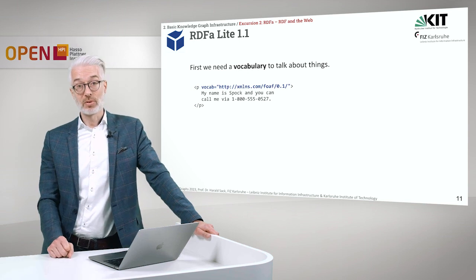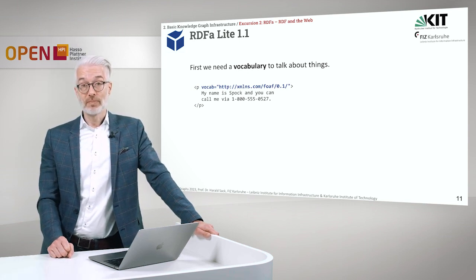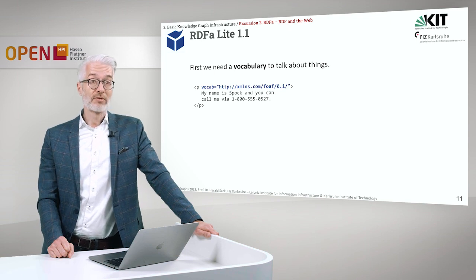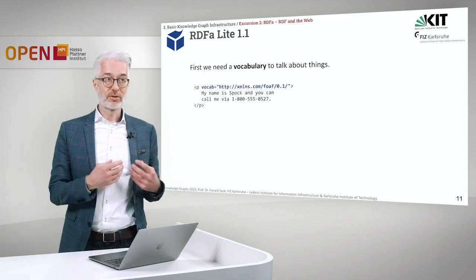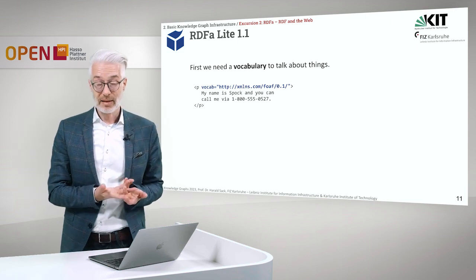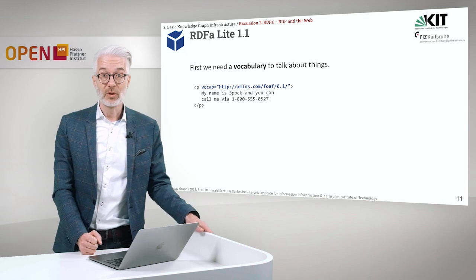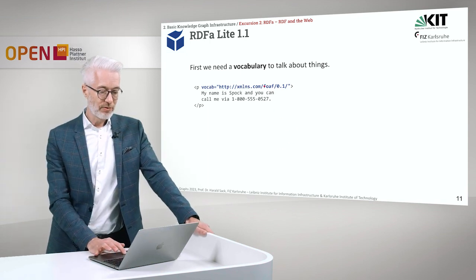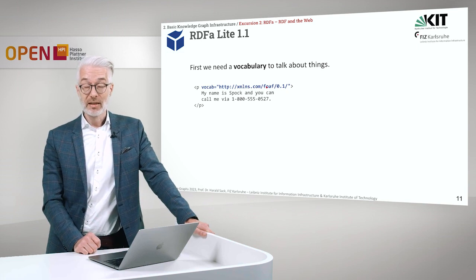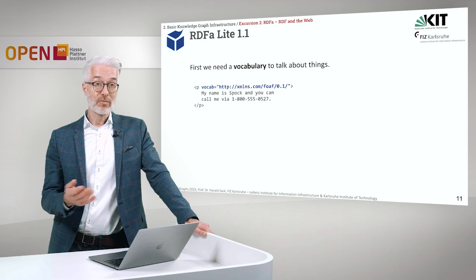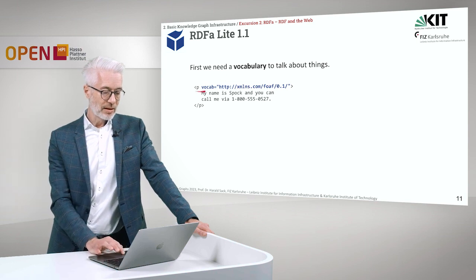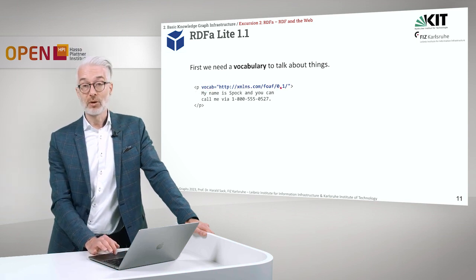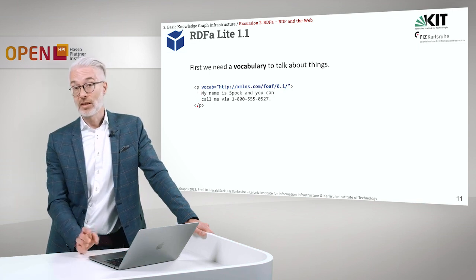Let's start with a simple problem: creating an address page for Spock with RDF-A annotation. The first thing we have to do is include a vocabulary. In RDF and the Semantic Web, if you want to describe address data and data about persons, there is a very well-established vocabulary called FOAF — Friend of a Friend — which provides classes like name, first name, address, and all the usual personal data. We include this here via the vocab attribute with the URI of the FOAF vocabulary, and then the rest of the traditional HTML page follows.